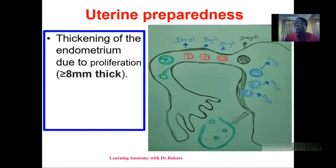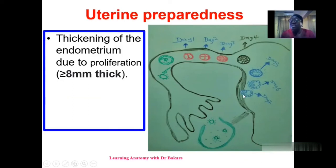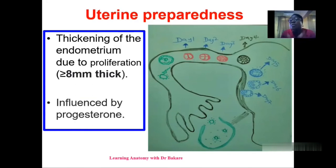How does the uterus prepare for implantation? The uterus also undergoes transformation to assist in the process. As these developmental events are occurring and the developing zygote is traveling through the fallopian tube, there is proliferation of the endometrium lining of the uterus — the most internal layer — causing it to thicken and increase in size, providing the space for implantation to occur. This process is under hormonal influence: progesterone, the pregnancy hormone, influences this thickening so that the implanting structure has space to be embedded into.